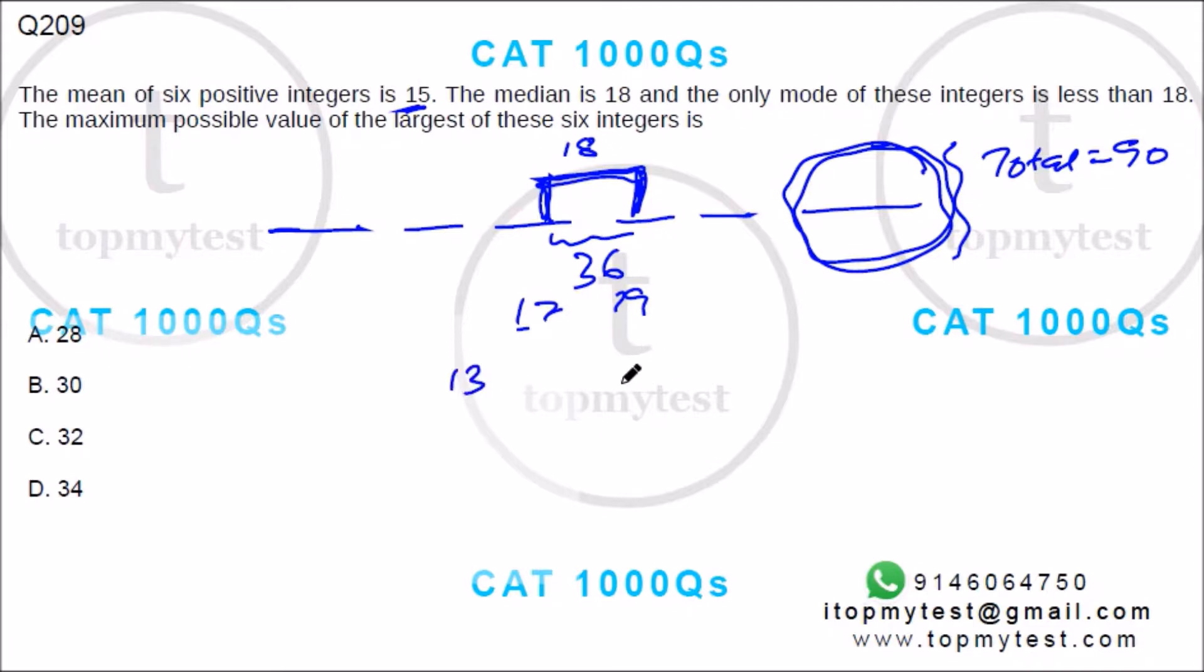So the fifth will be decided on how big the fourth is. I need to make the fourth number as small as possible, small as 19 because 18, 18 is out. This number can be 20. Now this number is set.